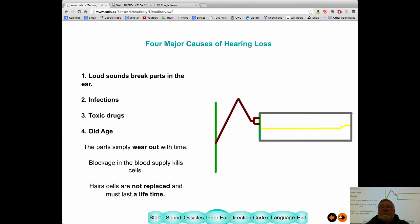And, finally, old age. Things wear out. If your blood supply isn't going to this area enough, the hair cells will die. And, of course, these cells aren't replaced. Once they've been damaged, no new cells will grow in, in the course of one's lifetime.